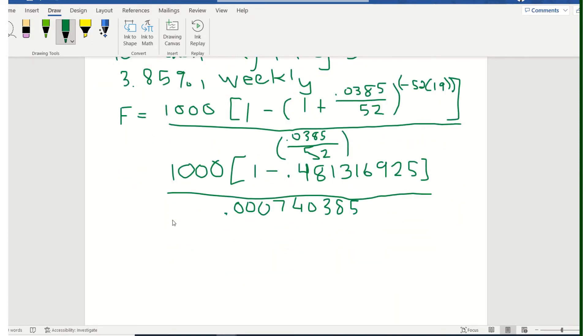So now on top, let's go ahead and subtract the 1 minus 0.481 blah blah blah there. 1 minus 0.481316925. So I'm going to have 1,000 times 0.518683075 over this denominator. And then I'll just go ahead and let the calculator do the rest of this.